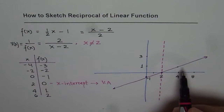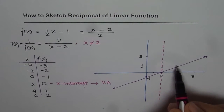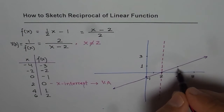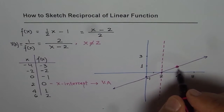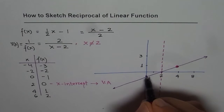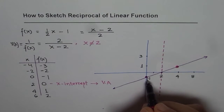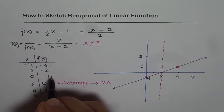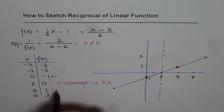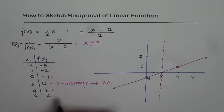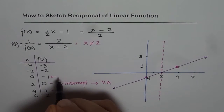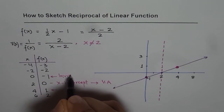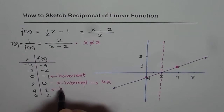What is the reciprocal of 1? Reciprocal of 1 is 1 over 1, which is 1. So this point will be common to both graphs. Similarly, the reciprocal of minus 1 is also minus 1. So these are invariant points. Wherever you have 1 and minus 1 on the graph, those points are common to both the function and its reciprocal — we call them invariant points.